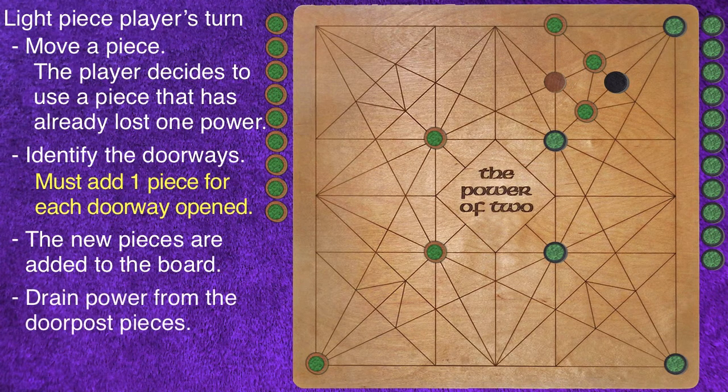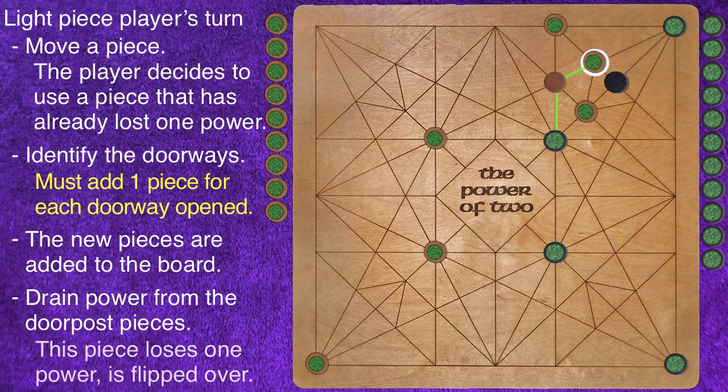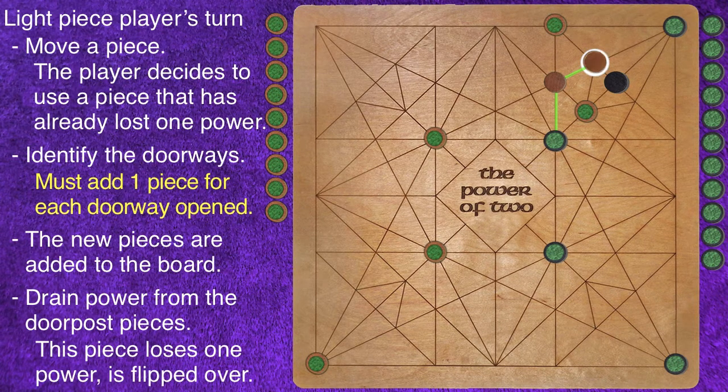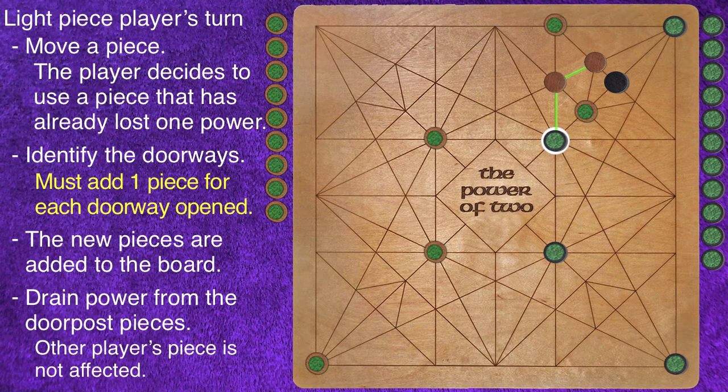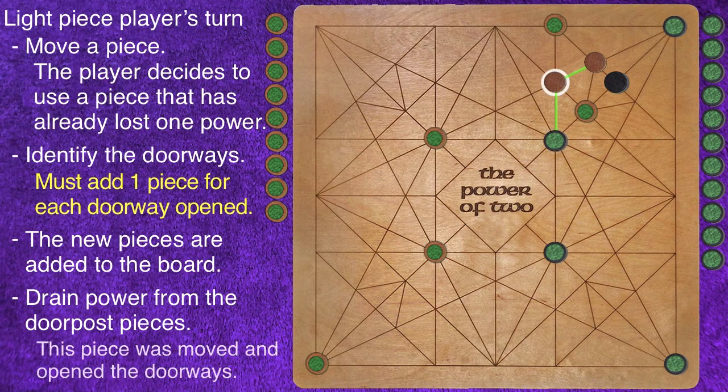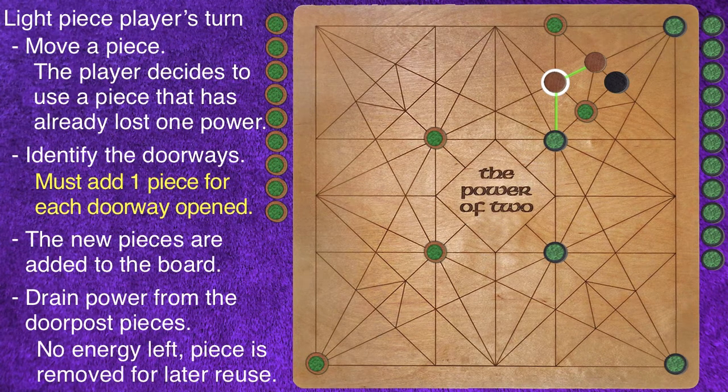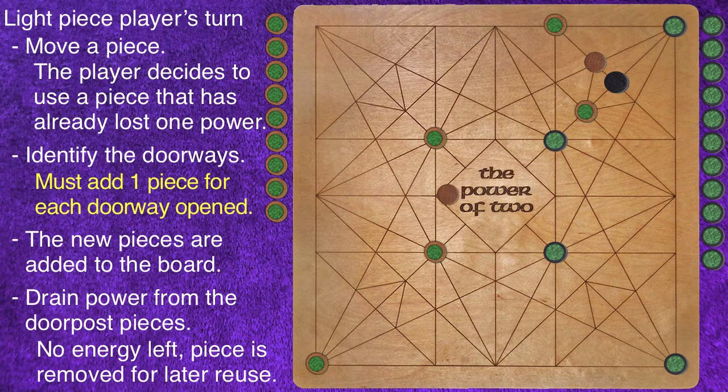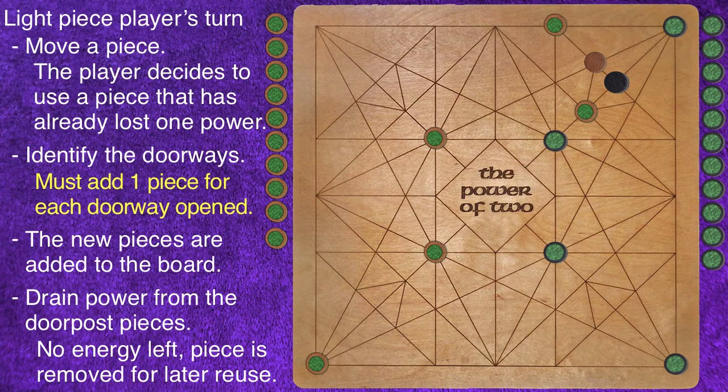The final step is to drain power from the doorpost pieces. Let's highlight the doorways again. This light piece was part of the doorway, so it loses one power and is flipped felt side down. This dark piece was also part of the doorway, but it is not affected. A player will never impact the power level of the other player's pieces. This light piece is the piece that moved and opened the two doorways. Since it is losing its second power, it is removed from the board and placed felt side up in the queue of available pieces. It can be brought back onto the board in a future turn.